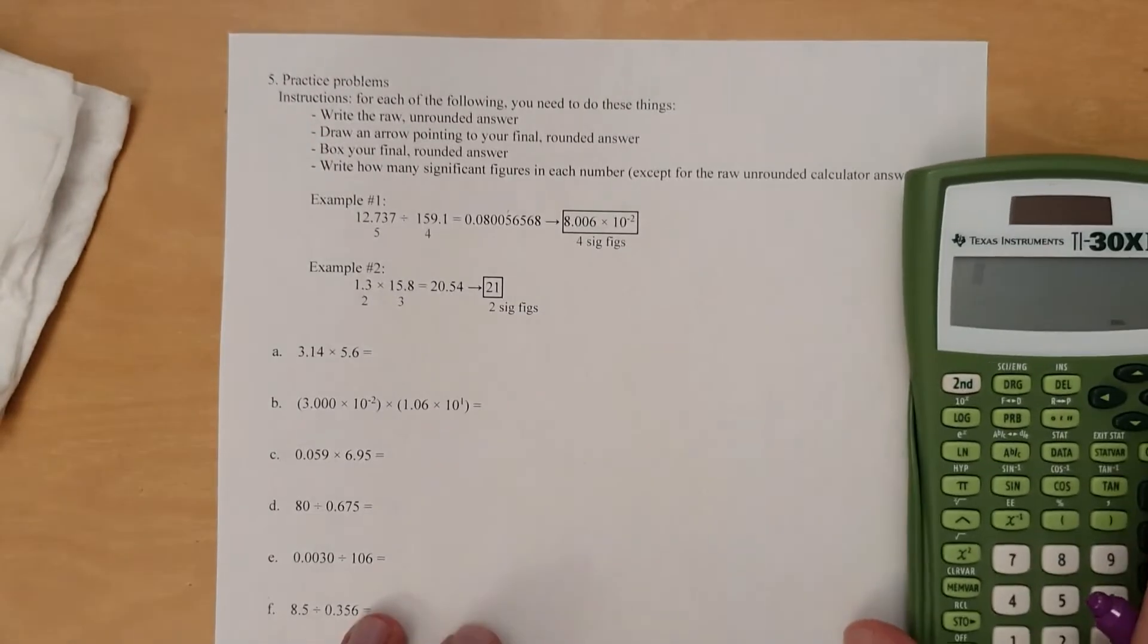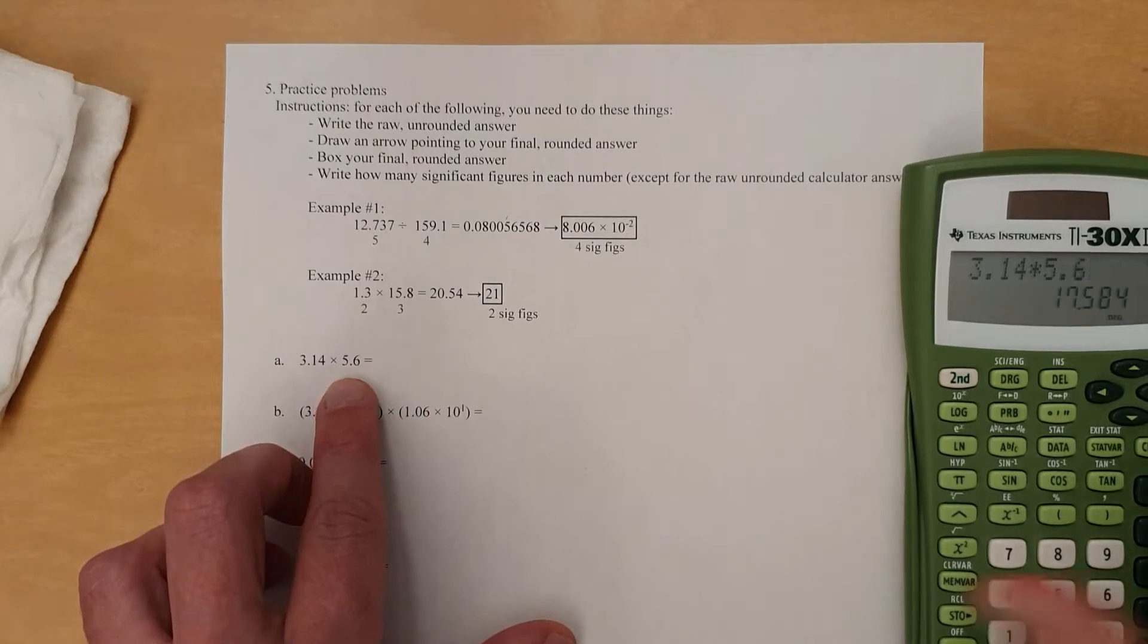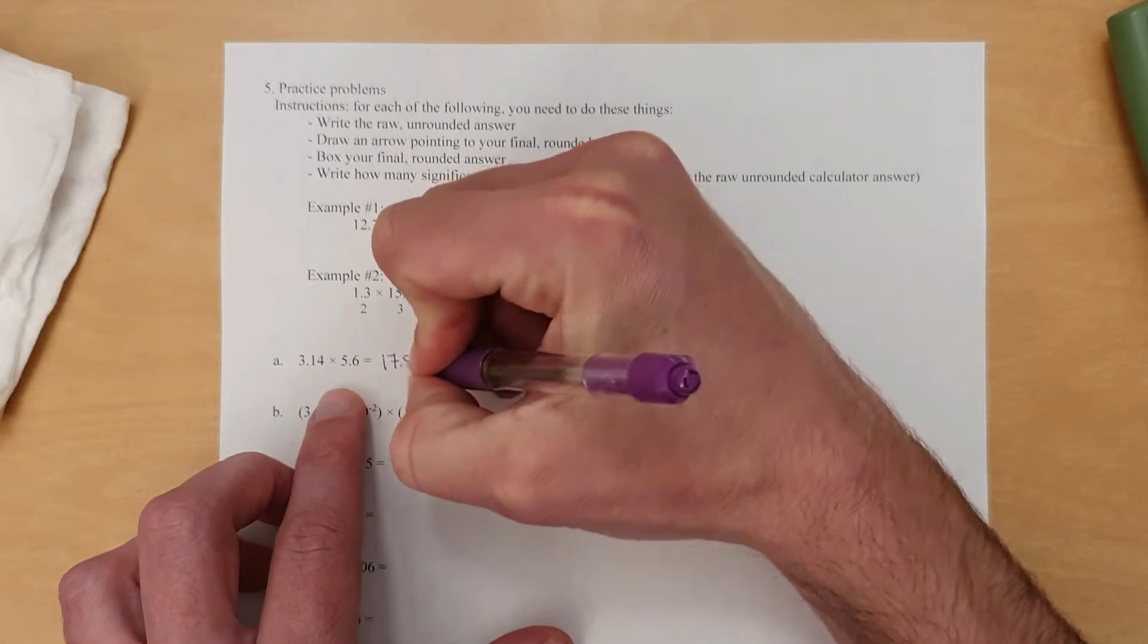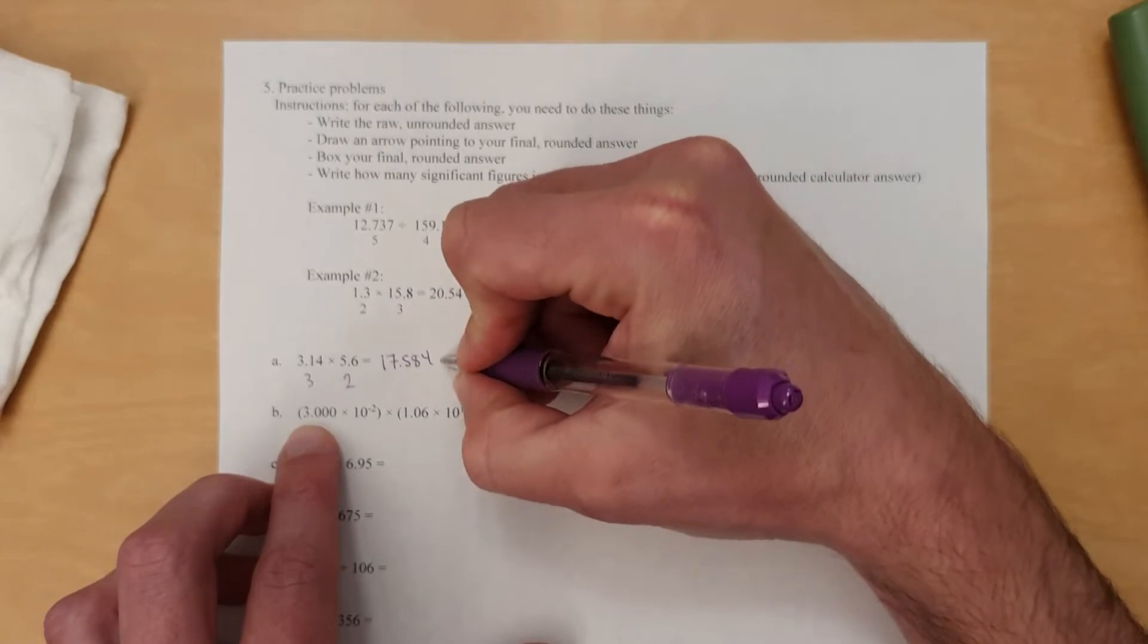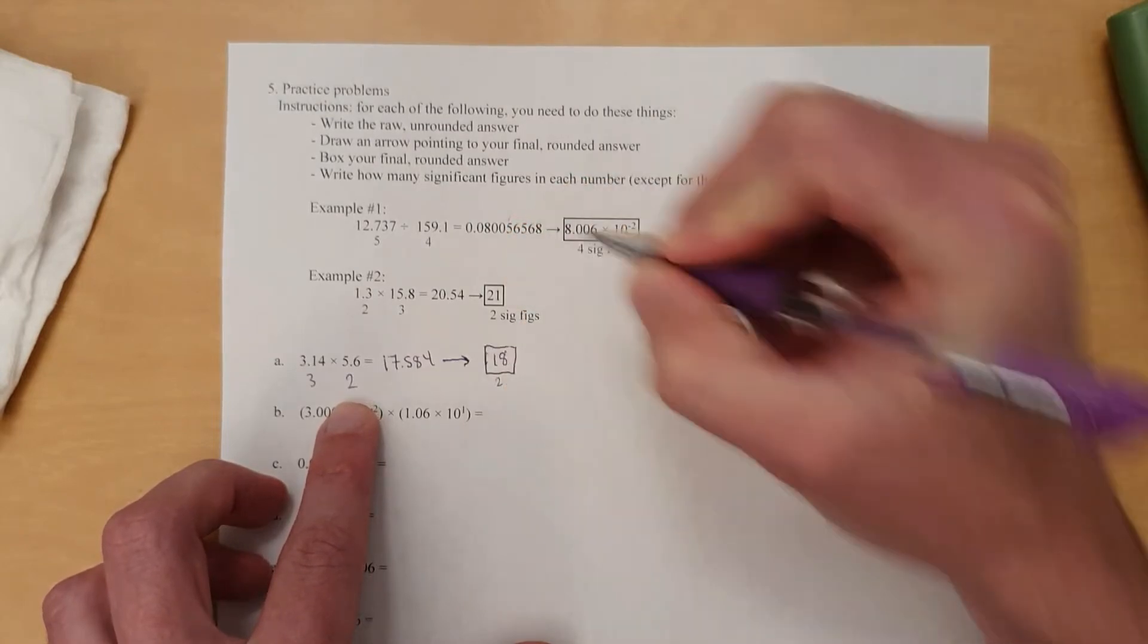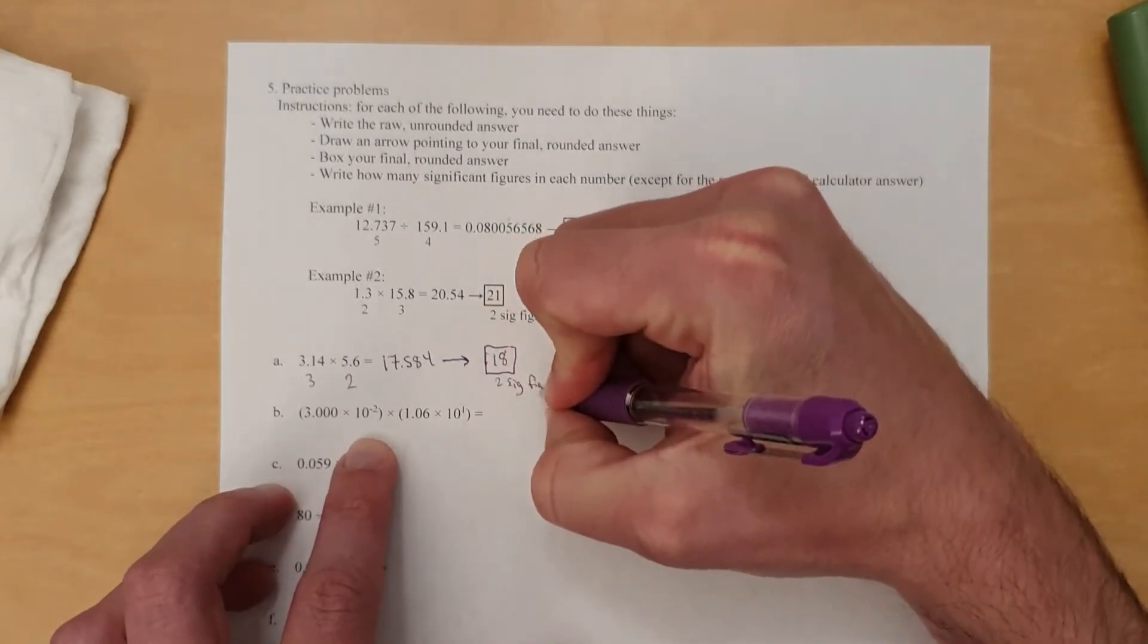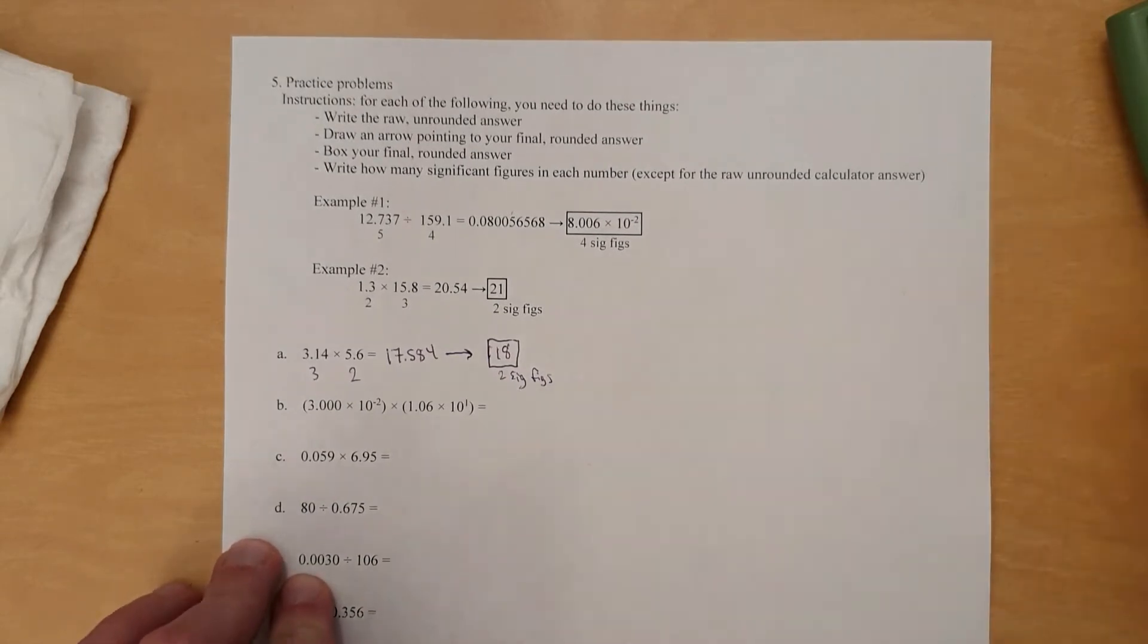All right, let's go through it. 3.14 times 5.6 is 17.584. This has 2 sig figs. This has 3 sig figs. We're going to round it to 2 significant figures, which means we're just going to round it to 18. So that's how you do it. Make sure the number of sig figs is outside the box. All right, and we'll actually add sig figs to it as a label. Yes, you can use this abbreviation for significant figures.